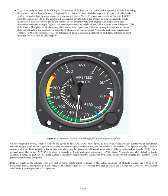Unless otherwise noted, when V-speeds are given in the AFM/POH, they apply to sea level, standard day conditions at maximum takeoff weight. Performance speeds vary with aircraft weight, configuration, and atmospheric conditions. The speeds may be stated in statute miles per hour (mph) or knots (KT), and may be given as calibrated airspeeds (CAS) or indicated airspeeds (IAS). As a general rule, newer AFM/POHs show V-speeds in knots indicated airspeed (KIAS). Some V-speeds are also stated in knots calibrated airspeed (KCAS) to meet certain regulatory requirements. Whenever available, pilots should operate the airplane from published indicated airspeed.